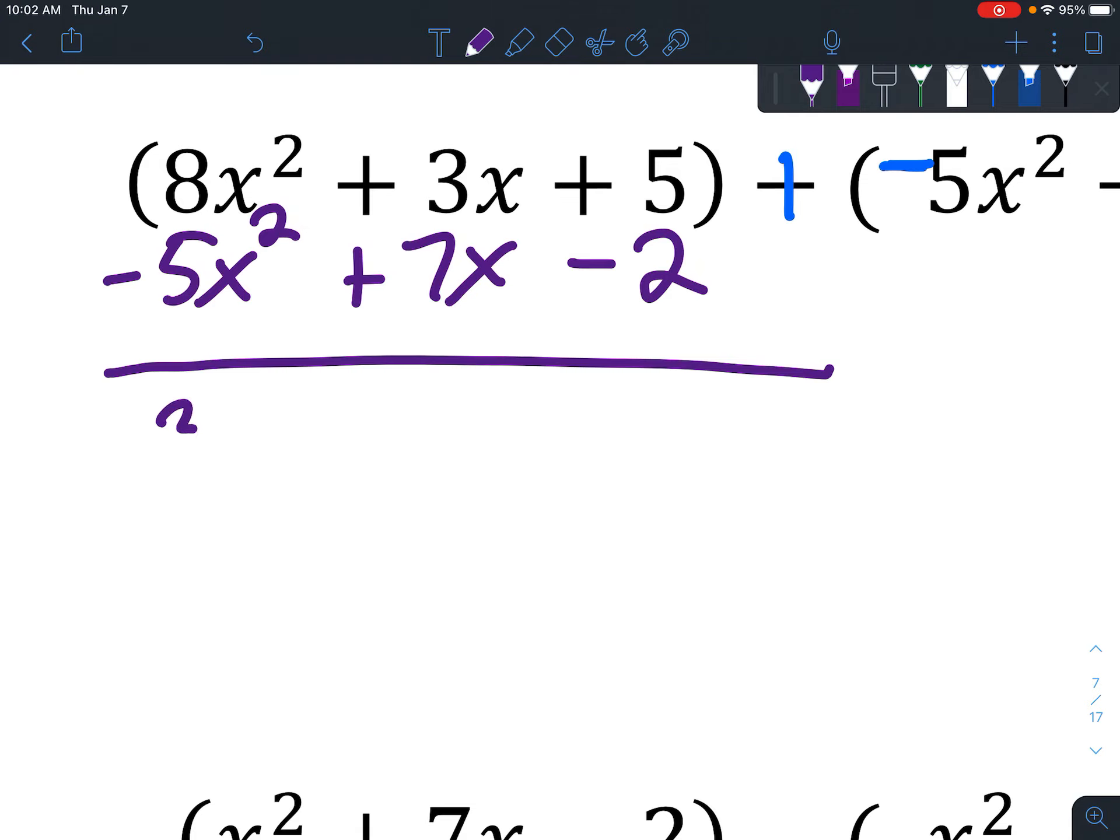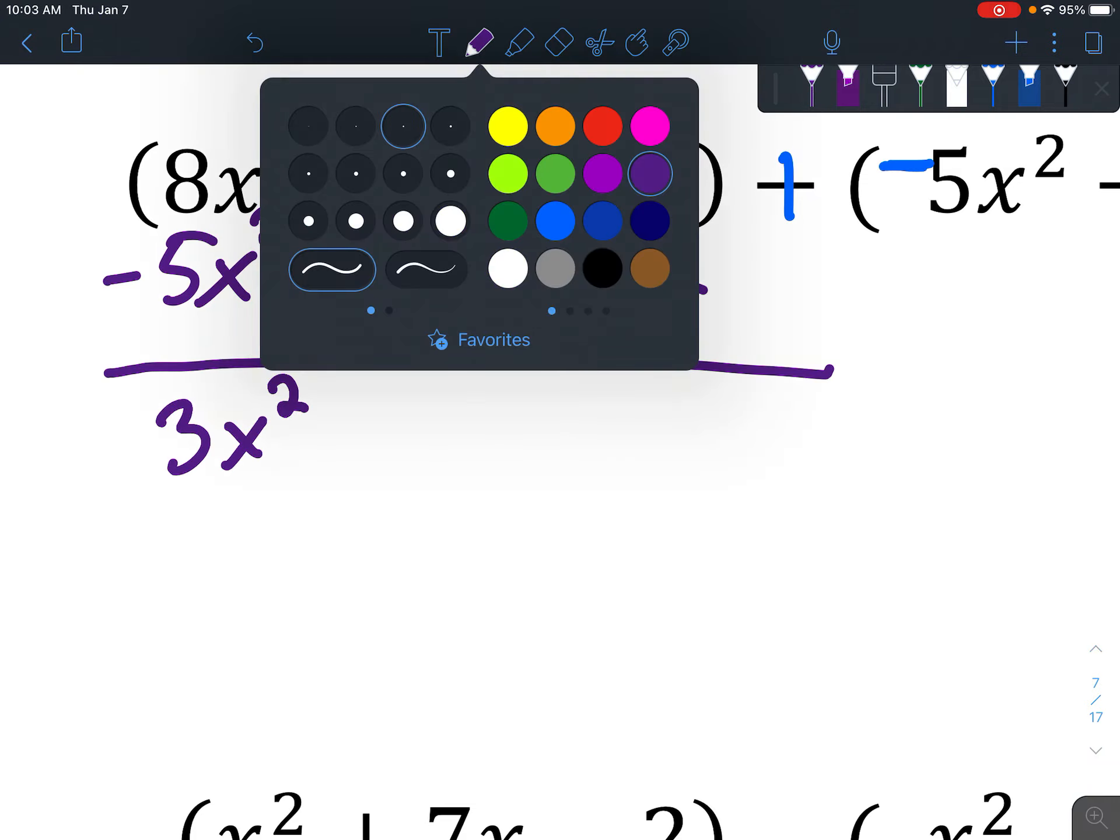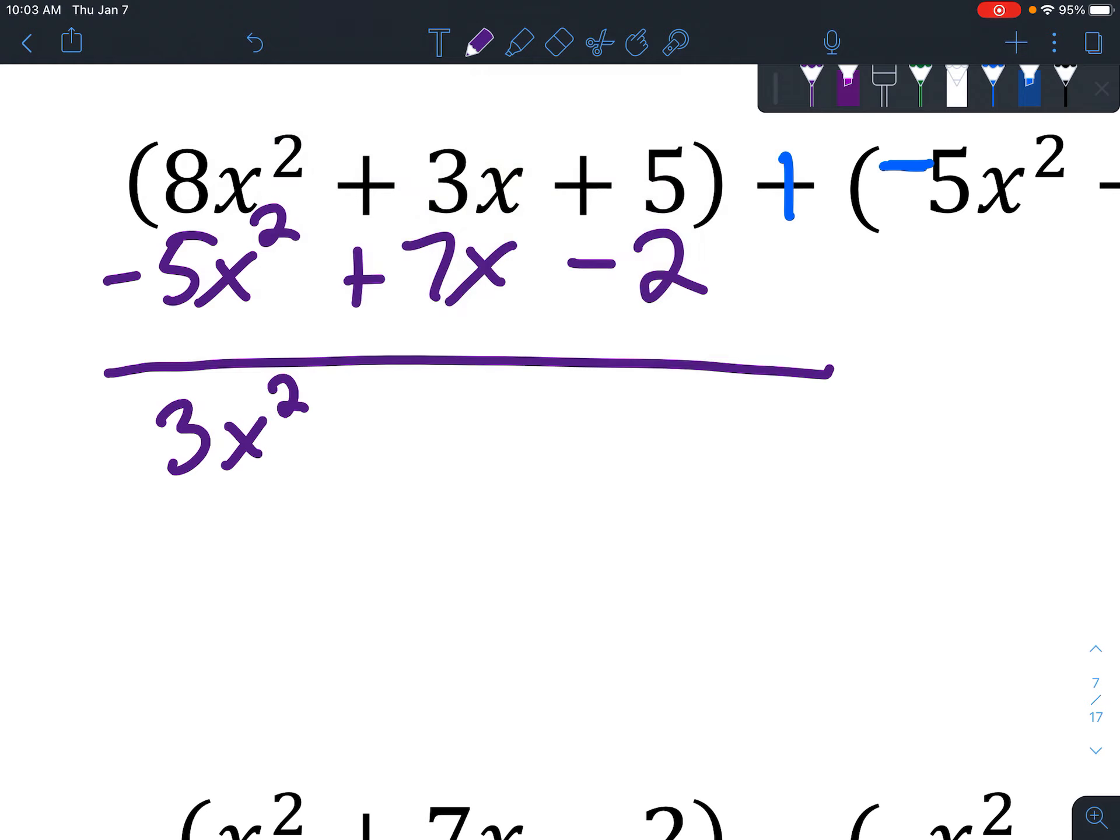If we have 8x squareds and take away 5, we have 3 left. This is a little too fat. If we have 3x's and add 7, we've got a total of 10x's. If we have 5 and take away 2, we get 3.